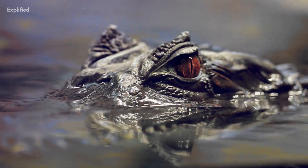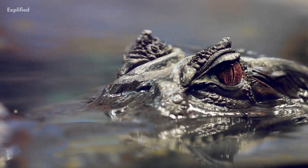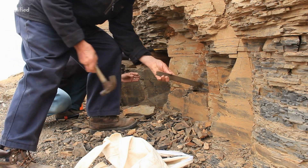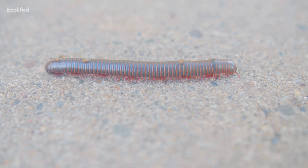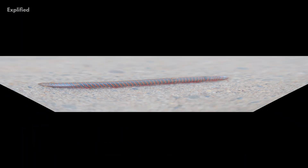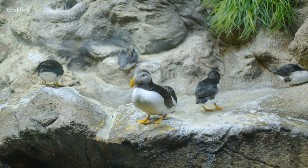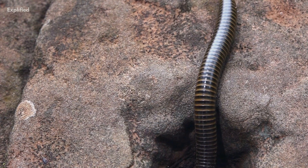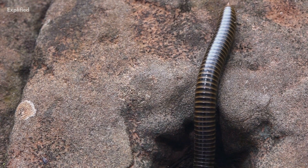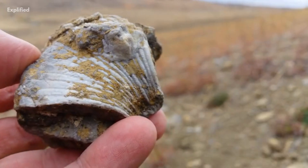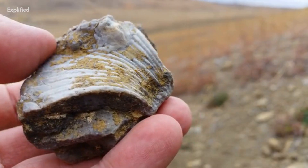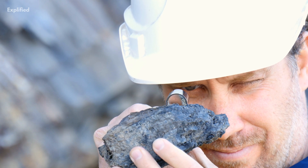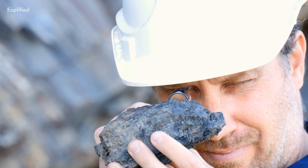Although no terrestrial animal remains have been discovered from the Ordovician, burrows and trackways discovered in Pennsylvania's late Ordovician have been interpreted as being made by millipede-like creatures. The burrows are in separate size classes, are bilaterally symmetrical, and were backfilled by the burrowing creature, implying a millipede-like organism. The burrows are located in a preserved soil and are linked to carbonate concretions that formed inside the soil, showing that they were formed in the same period as the soil.